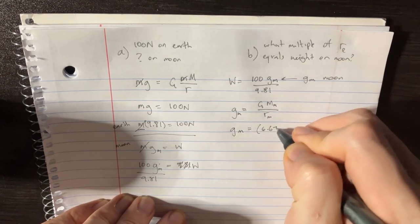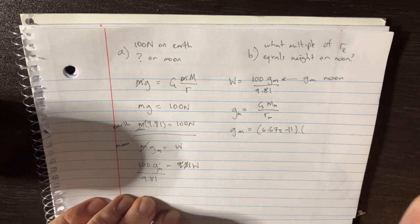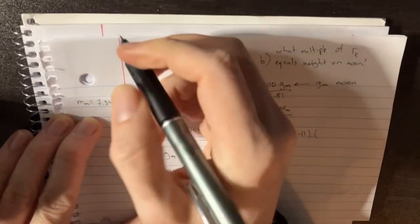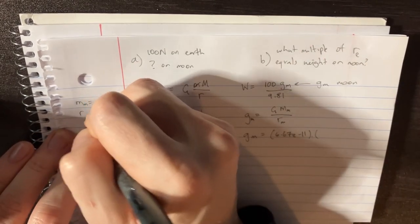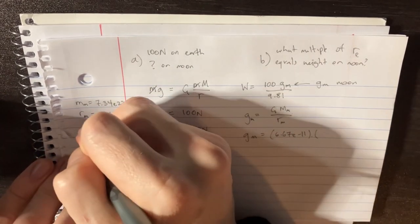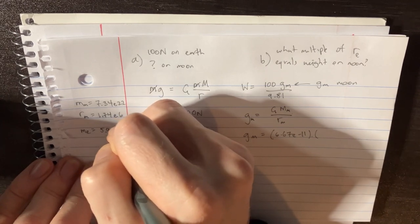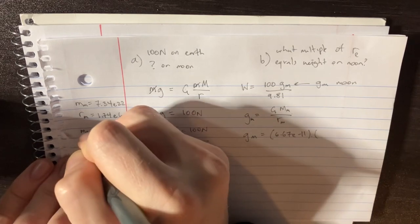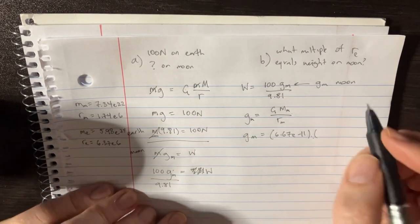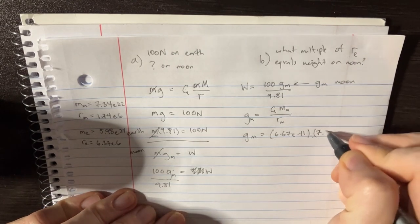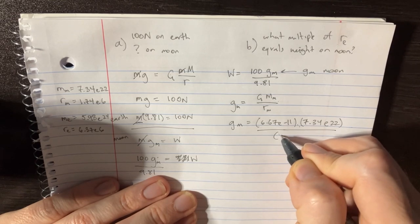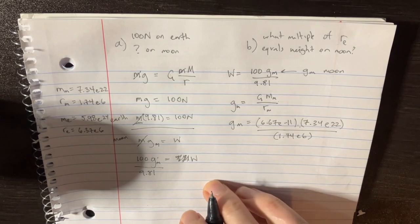So let's try to calculate that. g_m is equal to 6.67 e to the negative 11, and then the mass of the moon, I'll put those over here. Mass of the moon is equal to 7.34 e to the 22. The radius of the moon is equal to 1.74 e to the 6. And let's also put mass of the earth, 5.98 e to the 24, and the radius of the earth is equal to 6.37 e to the 6. Then we'll finish this, mass of the moon, 7.34 e to the 22, divided by 1.74 e to the 6 squared.